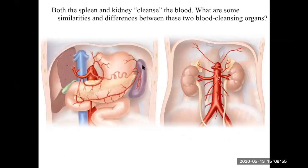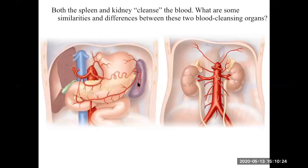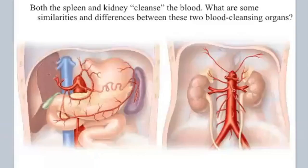As a side note: blood is also filtered in the spleen, which is full of white blood cells monitoring blood for pathogens and recycling older blood cells — making it part of the immune system. Both the kidney and spleen filter blood, but they serve very different functions. That's it for the urinary system.